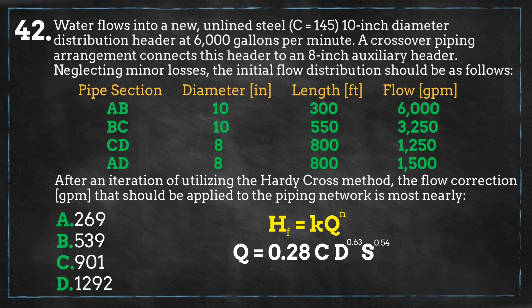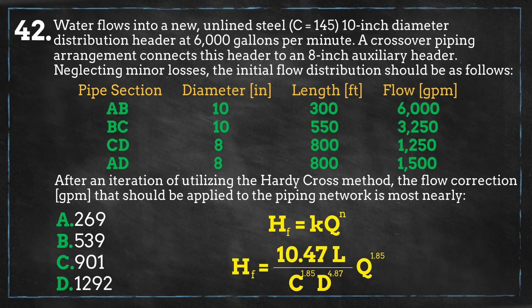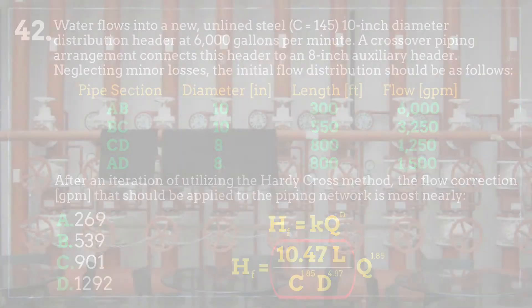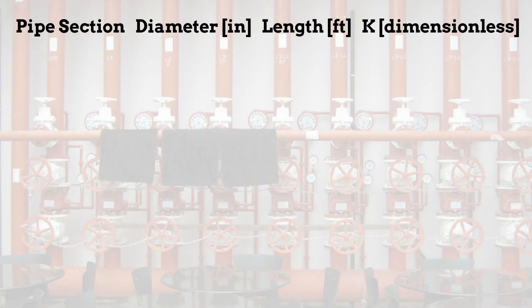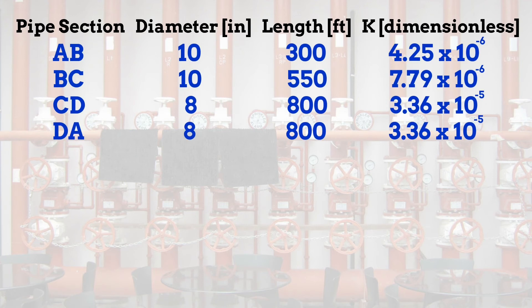Where d is the diameter of the pipe in inches. Head loss is calculated as the slope times the length of the pipe. Taking the Hazen-Williams equation, adjusting it to solve for the slope, and plugging it into the head loss equation gives the combined formula. The first portion of this equation represents the variable k. We can now plug in the information for each of the four sections of piping and get the values for each variable in the head loss equation.